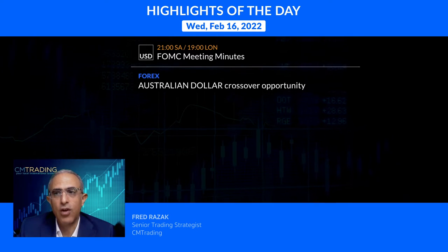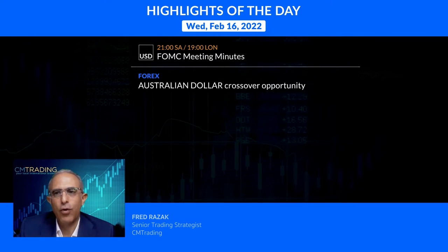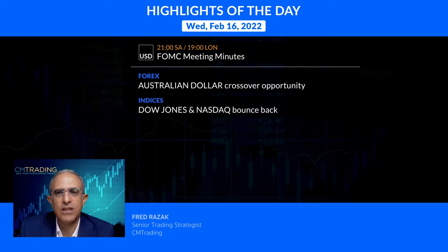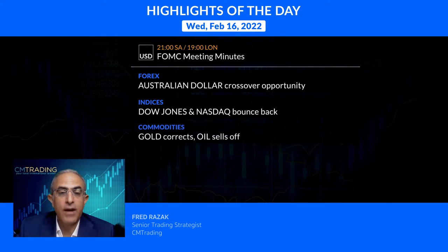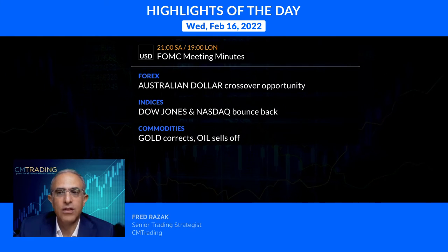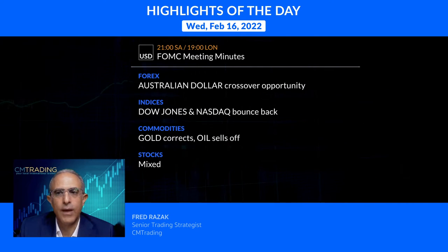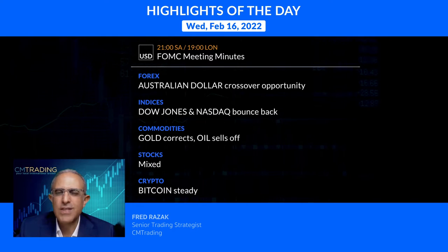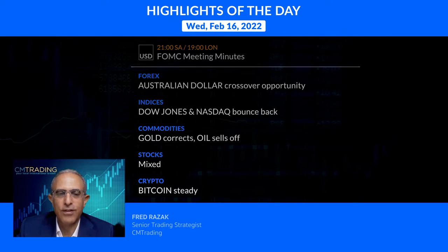Looking at the various markets: starting with forex, the Australian dollar has a crossover opportunity we'll examine shortly. For indices, the Nasdaq and Dow Jones both bounced. In commodities, gold corrected itself at resistance and oil sold off. Stocks were also mixed, and lastly Bitcoin is steady. Let's take a look at the markets and see what we can expect from today's trading.